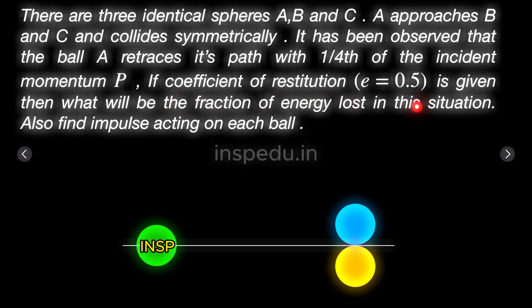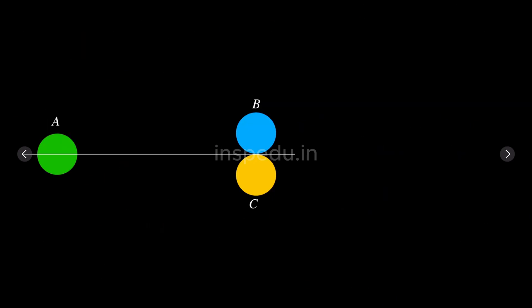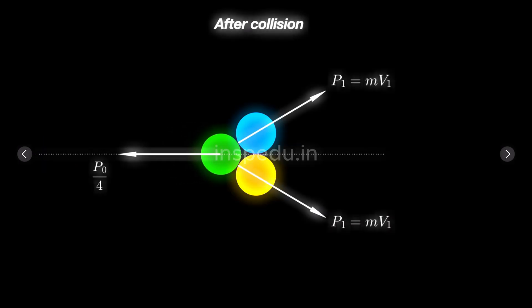This is the situation given to us. There are these three balls A, B, and C. The initial momentum of ball A is given, and this is the situation before collision. As ball A approaches and hits balls B and C symmetrically,